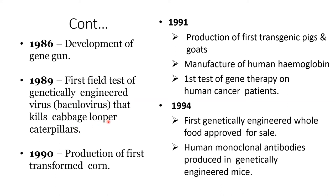In 1989, the first field test of a genetically engineered virus — a baculovirus that kills the cabbage looper caterpillar — was conducted. In 1990, production of the first transformed corn was done. In 1991, the first transgenic pig and goat were produced, human hemoglobin was manufactured, and the first gene therapy test on a human cancer patient was performed. In 1994, the first genetically engineered whole food was approved for sale, and human monoclonal antibodies were produced in genetically engineered mice.